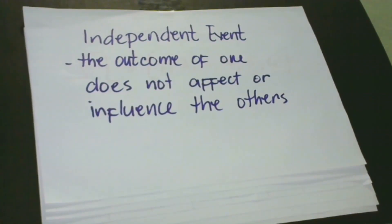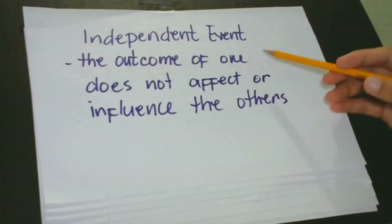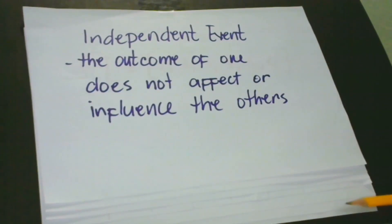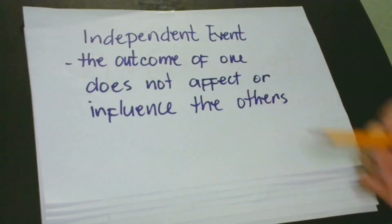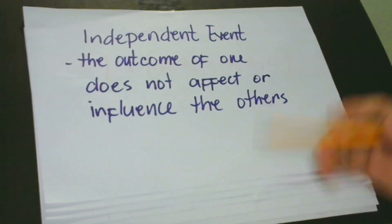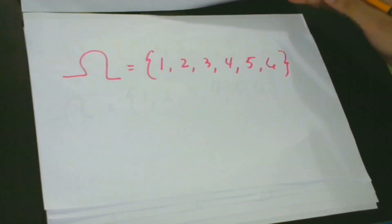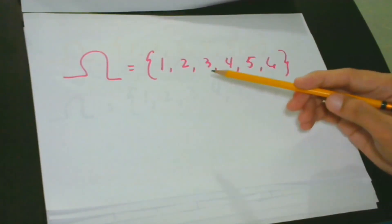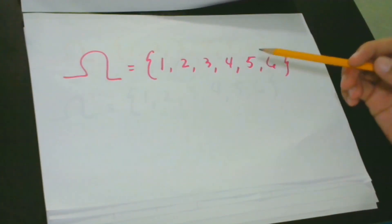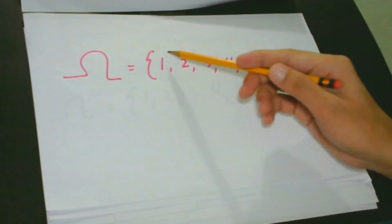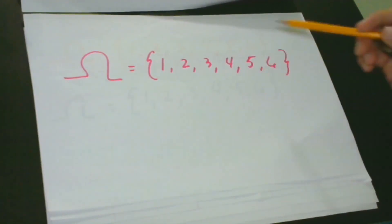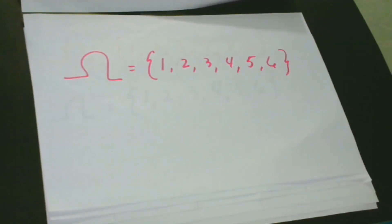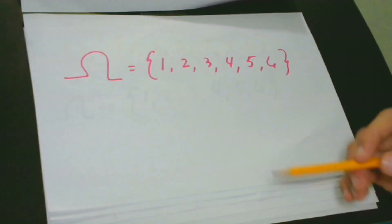At this point, you might ask: what is an independent event? An independent event means that the outcome of one does not affect or influence the others. A fair die has six possible outcomes. When you throw a die and the result is two, it has nothing to do with the result when you throw the die again. In real life, for example, your drinking of coffee has nothing to do with your enrolling in an online course — because both are independent events.